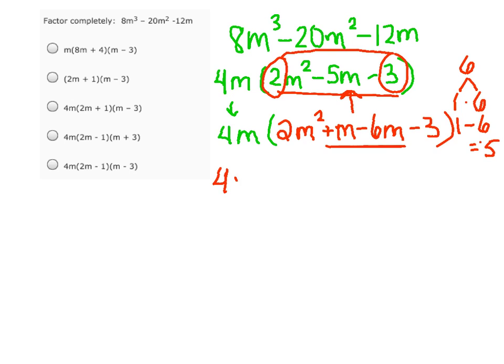And now we're going to factor by grouping this middle term. So we're going to look at our first two terms in the parentheses, 2m squared plus m. We can divide out an m from both of those, so what's left is 2m plus 1.